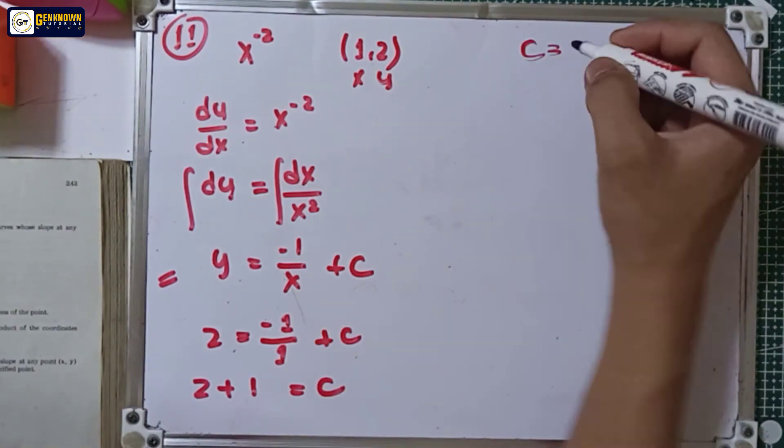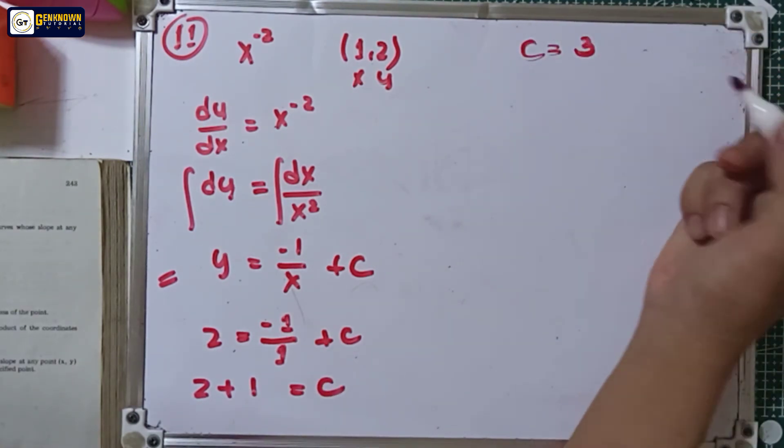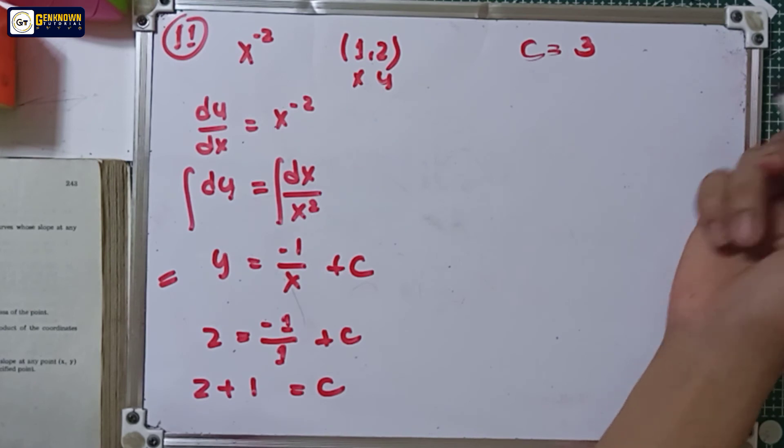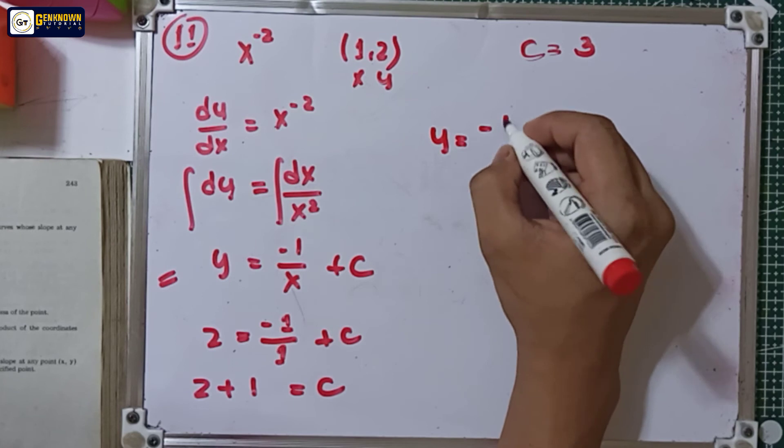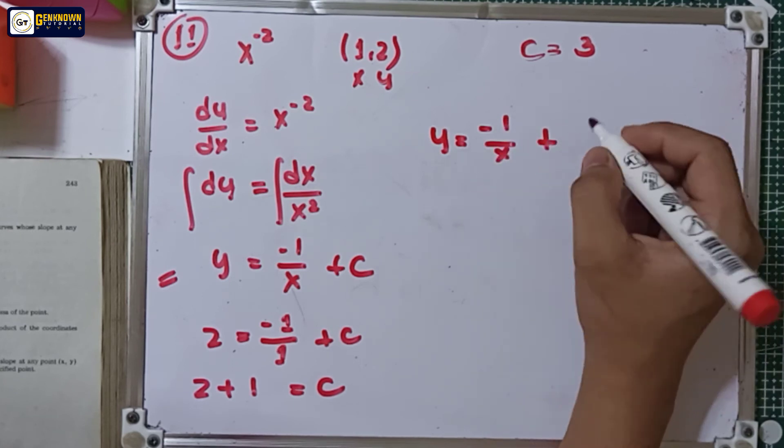So the constant is equal to 3. So let's rewrite the equation. We have y is equal to negative 1 over x plus the constant 3.